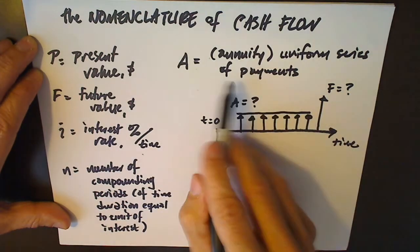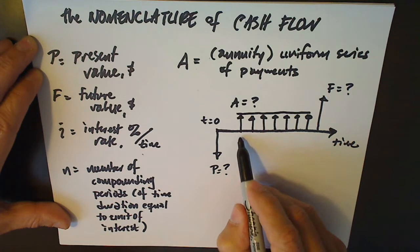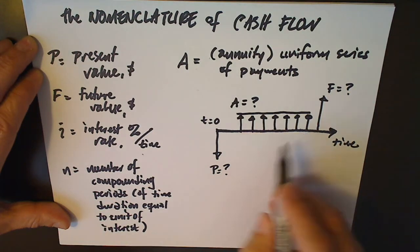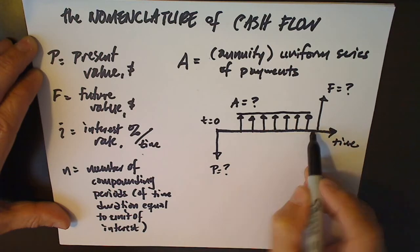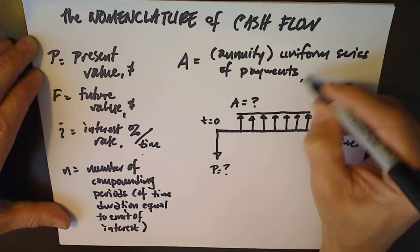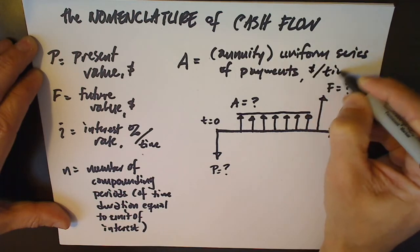Well, whereas A, when it's annuity, these intervals are going to be one, two, three, four years. Each payment will be one year apart. These could also be daily, weekly, monthly. The A is going to be expressed in dollars per unit time.